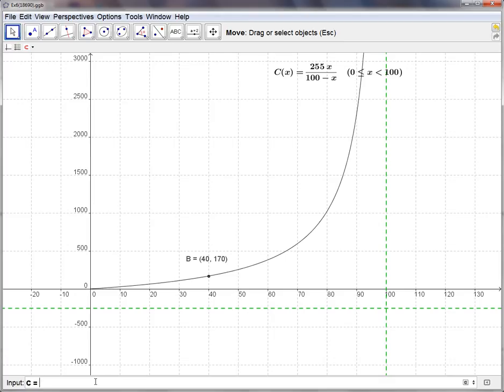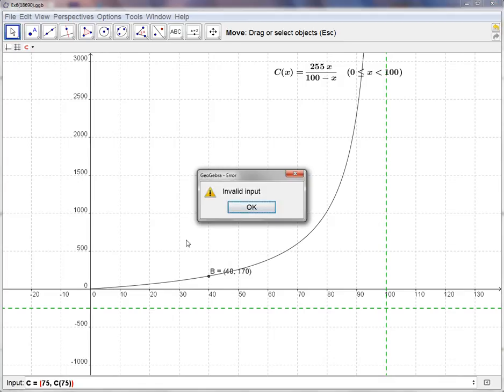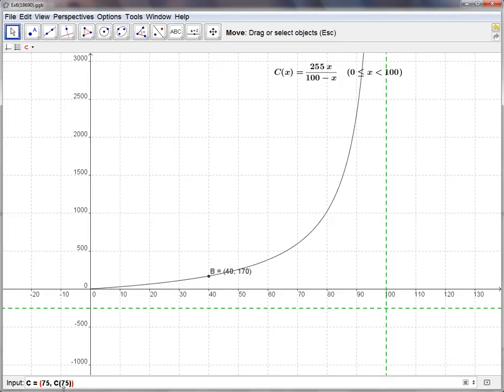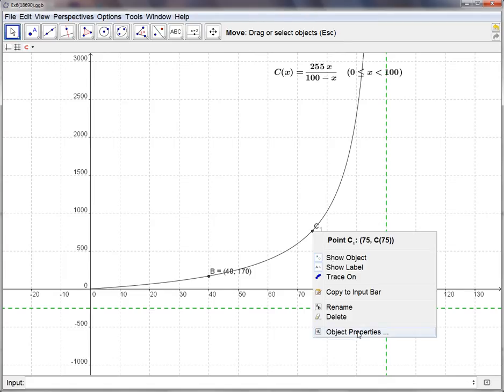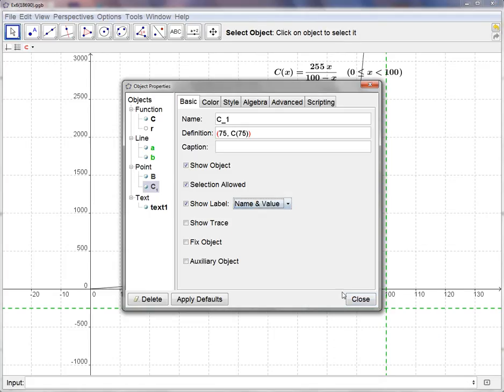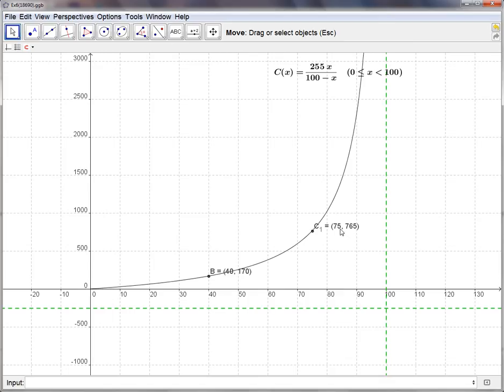$170 million for 40%. And we can do one more. We'll call it part C, which is 75%. So that's 75. I'm going to call it C of 75. Oh, I can't call it C because it's already named C. But I'll call it C1. And this over here gives us 75%. It would cost $765 million. So that's a lot of money. We have our two answers.